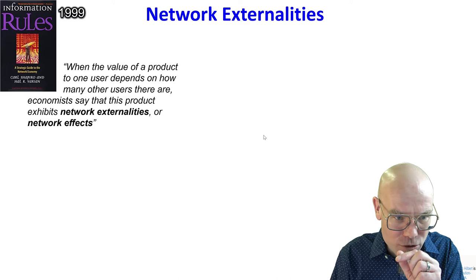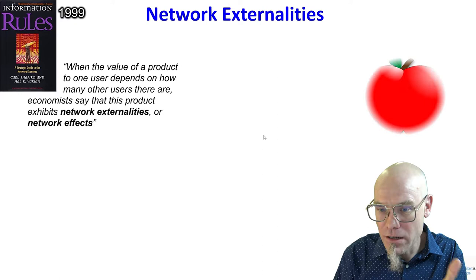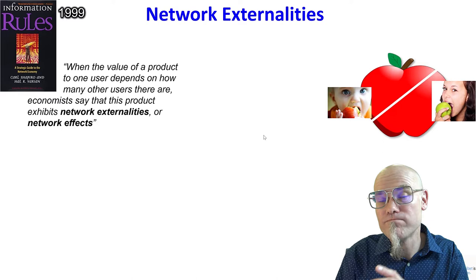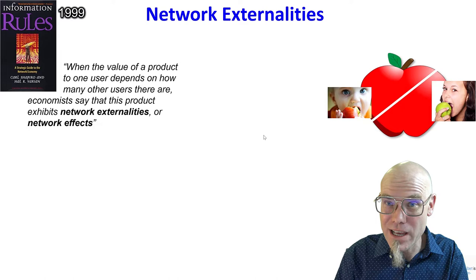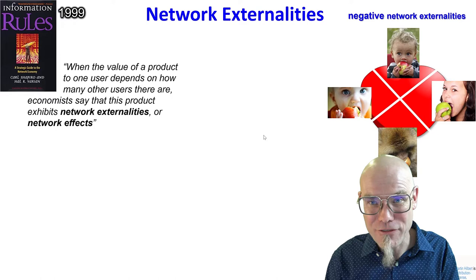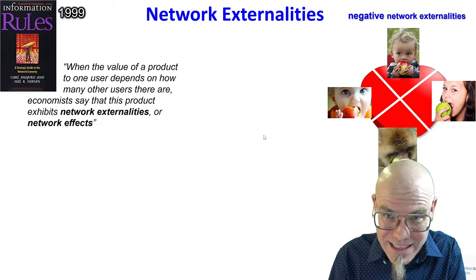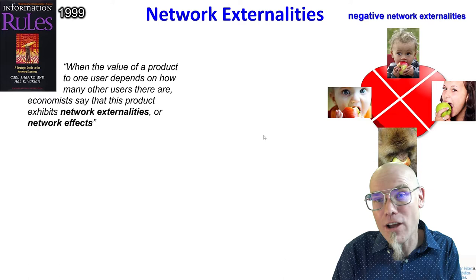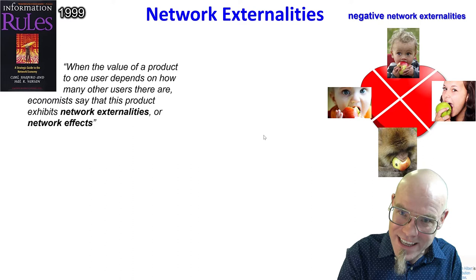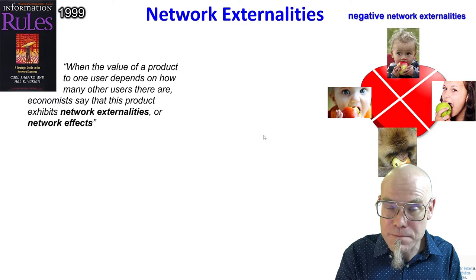Traditionally, we think of negative network externalities — the law of scarcity. If you have an apple and two users, the value of the apple is cut in half. With four users, each gets a quarter. This law of scarcity is extremely important for understanding how the economy works — supply and demand. The more people use a scarce product, demand goes up and supply has to catch up. This fundamentally has to do with negative network externalities.